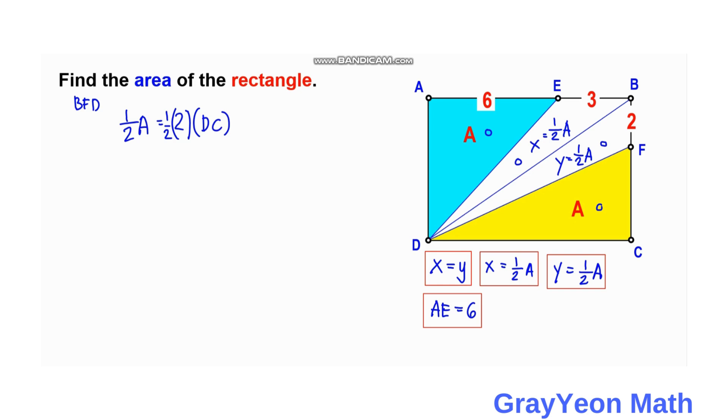And for FCD, so we have FCD, the area A is equal to one half times FC times CD, or DC. FCD. And next is we divide these two equations, so we can cancel this A, this one half, and this DC. So we have here one half is equal to 2 over FC. So for FC, if you cross multiply, so FC is equal to 4.